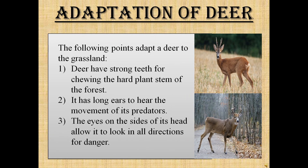Adaptation of deers. First, deer have strong teeth for chewing the hard plant stems of the forest. Second, they have long ears to hear the movement of their predators. Third, the eyes on the sides of their head allow them to look in all directions for danger.